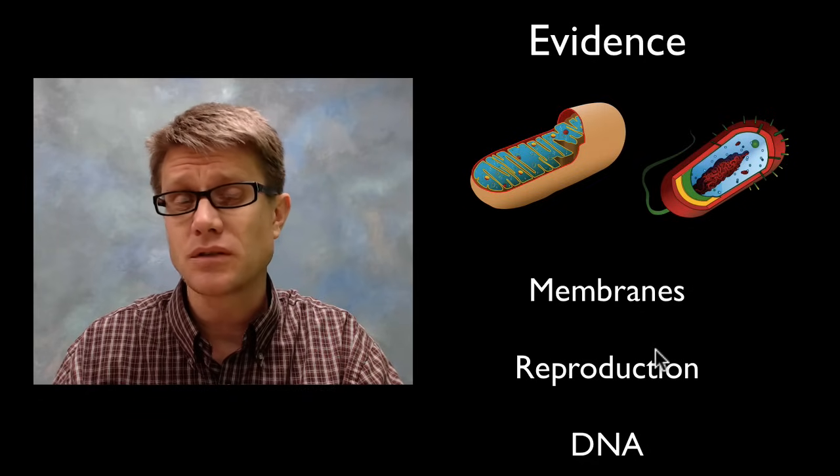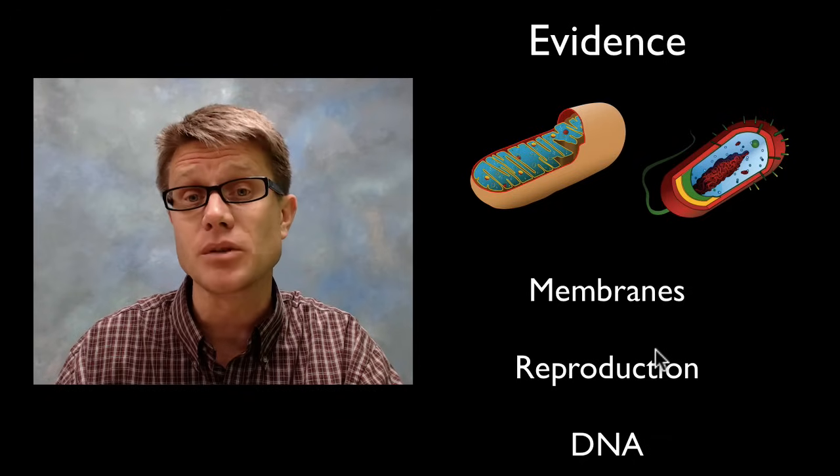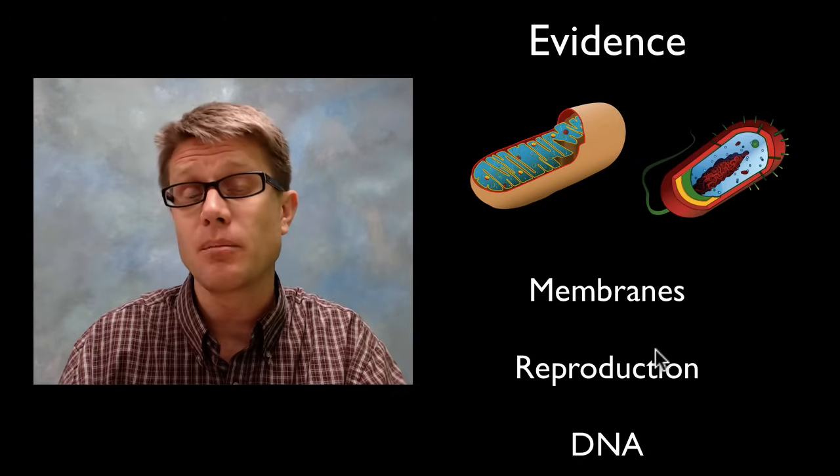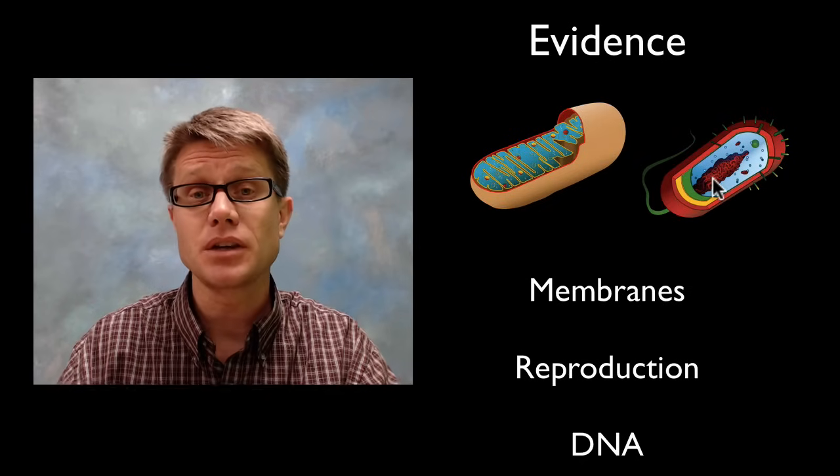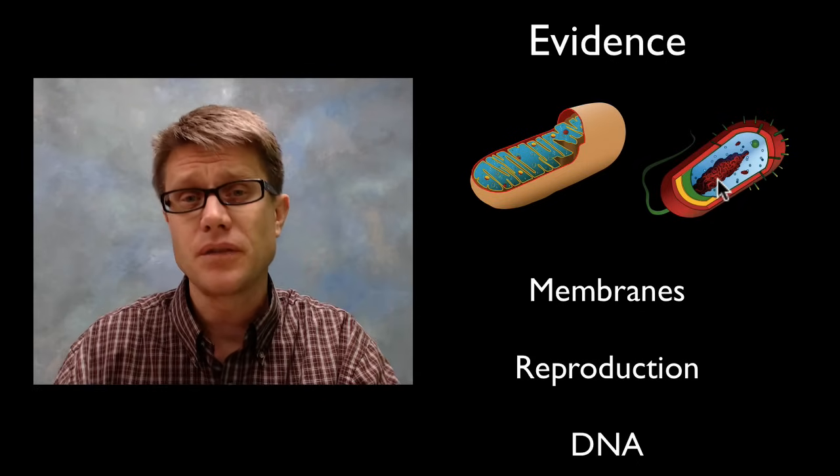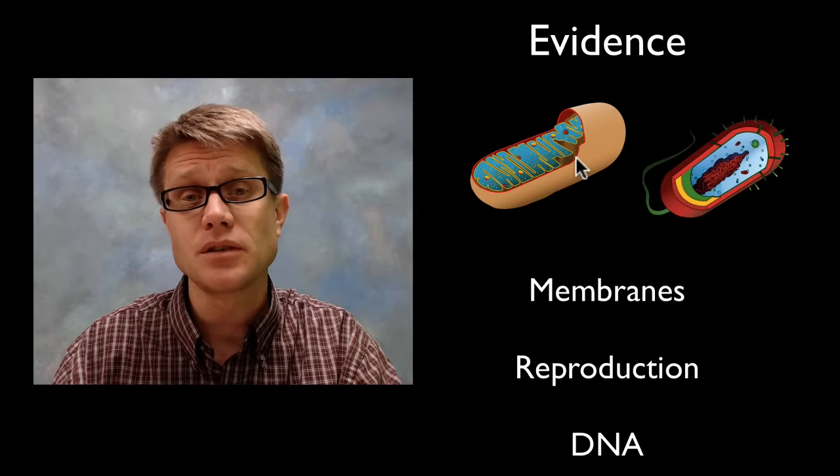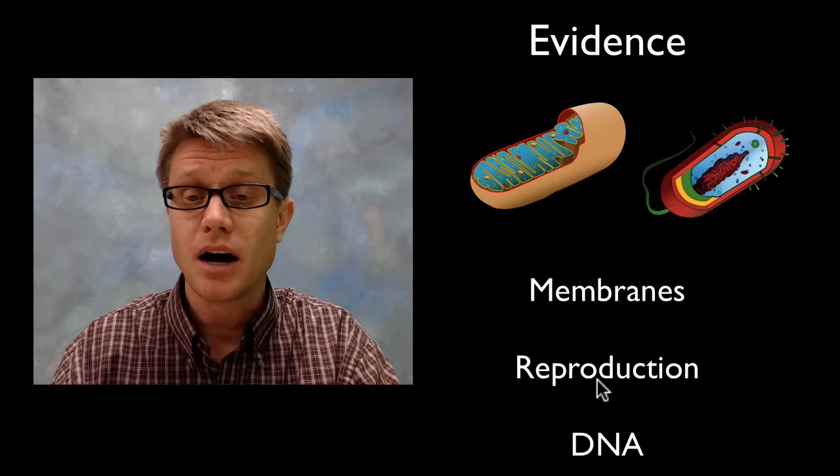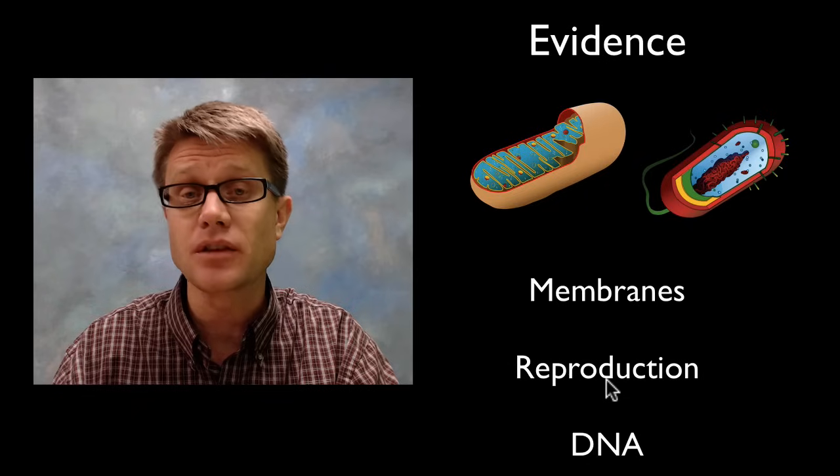The way they reproduce is very similar. Now eukaryotic cells, how do they reproduce? Basically they copy their chromosomes. The chromosomes line up in the middle. And then it divides in half. And we call that mitosis. Now that's not what happens in bacteria. Bacteria are going to copy all their DNA and then they just pinch in half. And we call that binary fission. What we find is that even in your cells the mitochondria are making copies of themselves through a process of asexual reproduction that looks a lot like asexual reproduction in bacteria.